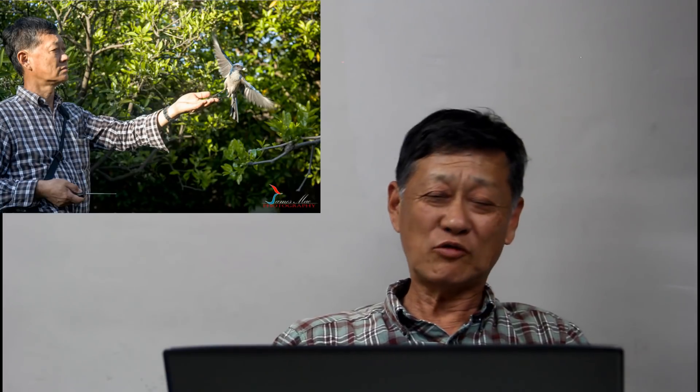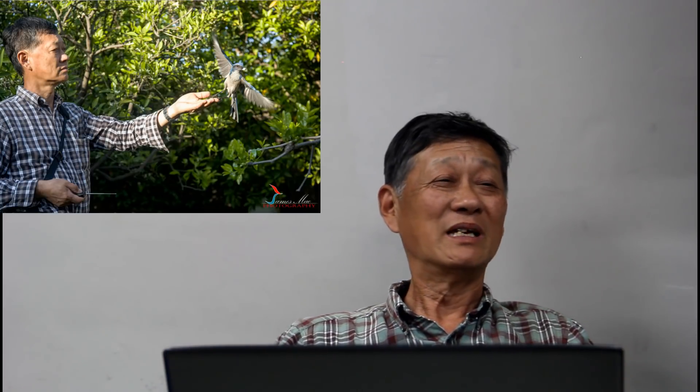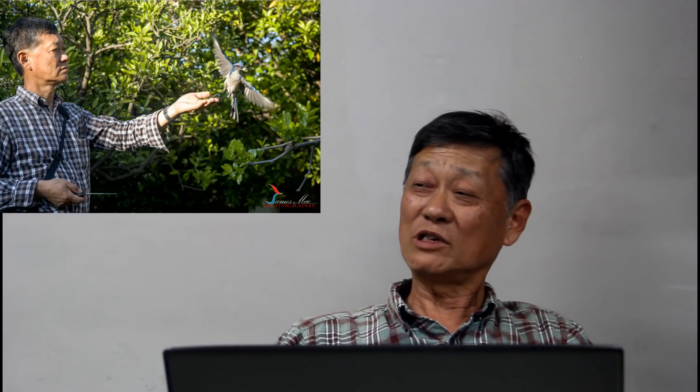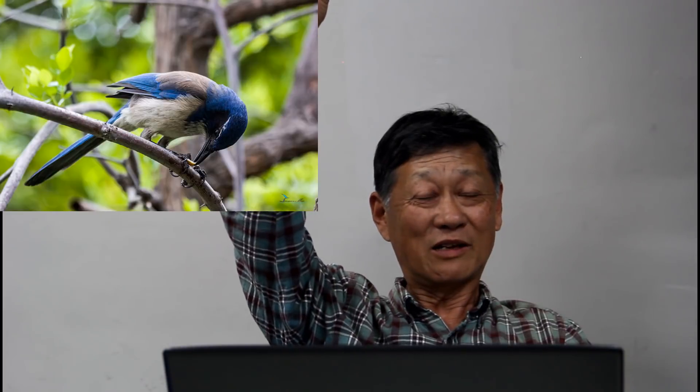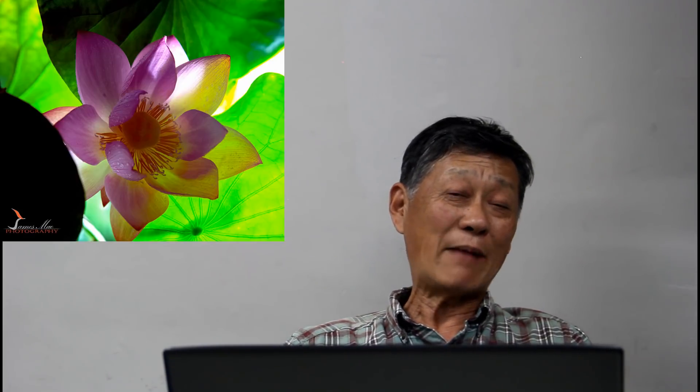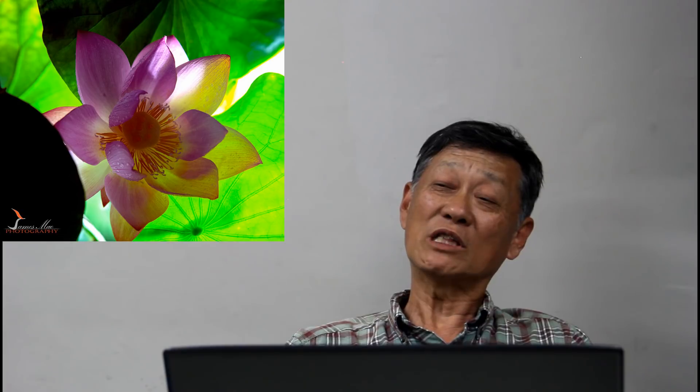我家里有一棵中国大枣，味道特脆特甜，但每次松鼠先截足先登，于是我放了笼子抓松鼠，用花生做诱饵。结果套住了一只西丛鸦，我把它放了，它就记住了我。后来我慢慢把花生放得越来越近，最终放在手上、头上，它就会飞到我肩膀上来。